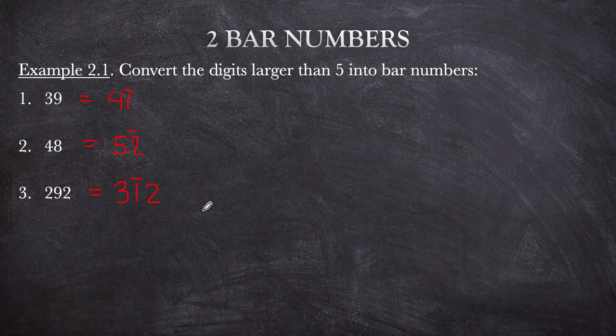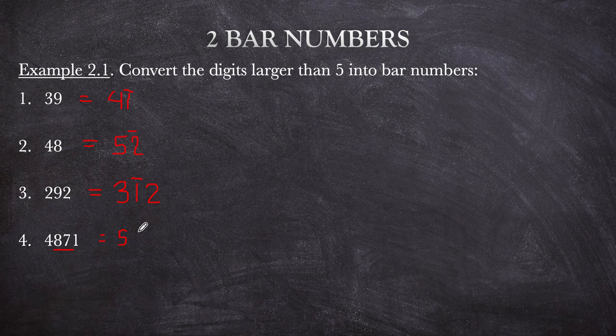For 4,871: we have 87 here, so add 1 to 4 to get 5. The 8 is not the last number, so apply 'all from 9' — that gives bar 1. Then the 7 is last, so apply 'last from 10' — that gives bar 3. So the result is 5 bar 1 bar 3, or 5 bar 13, 1.